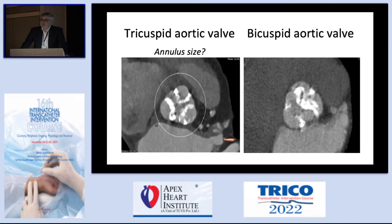All the evidence for TAVI against surgery is based on patients who got a tricuspid aortic valve. It's not the same as we do not treat patients with bicuspid aortic valve, but it's often related with more inferior outcomes — more paravalvular leak, more valve embolization, and so on. So good candidates are patients with tricuspid aortic valve; start with those patients, not patients with bicuspid aortic valves.